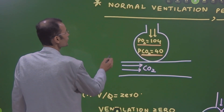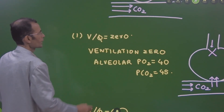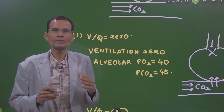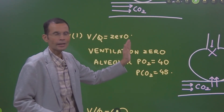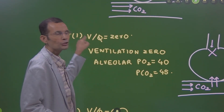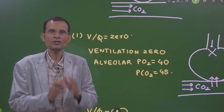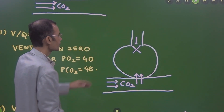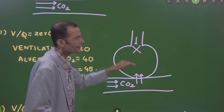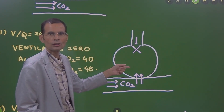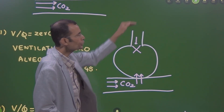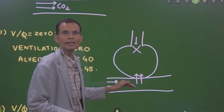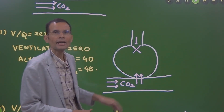One deviation can be a V/Q ratio of 0. What is the meaning of V/Q ratio 0? That means the numerator — ventilation — will be 0. There is no ventilation happening in the alveolus; no new air is reaching the alveolus, meaning no new oxygen is coming in from the atmospheric air.